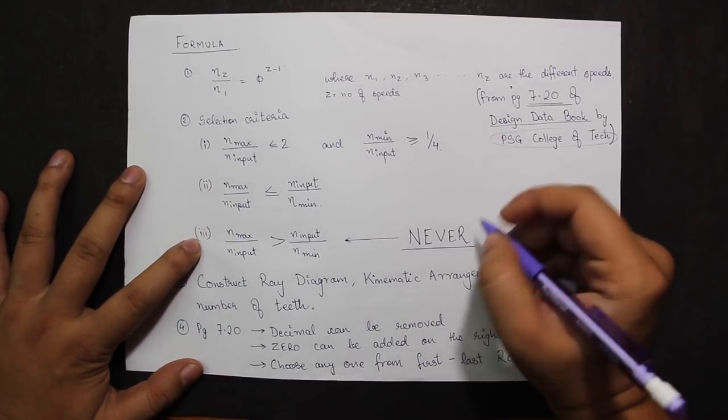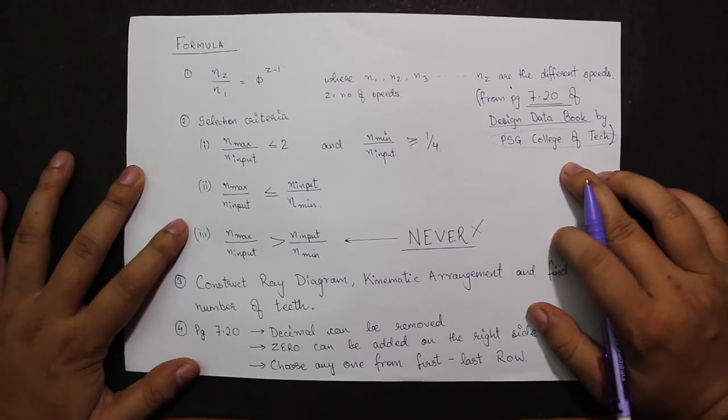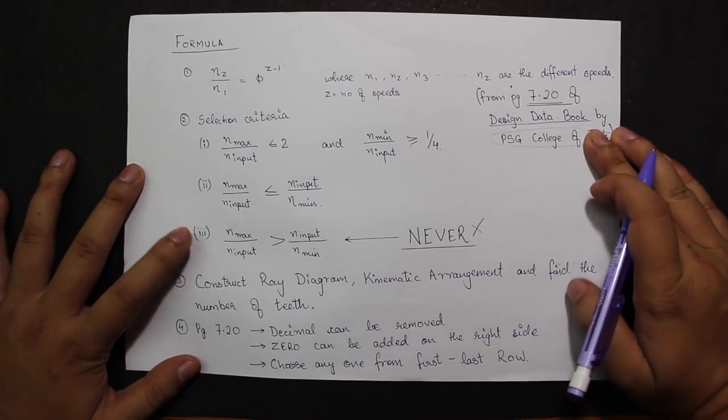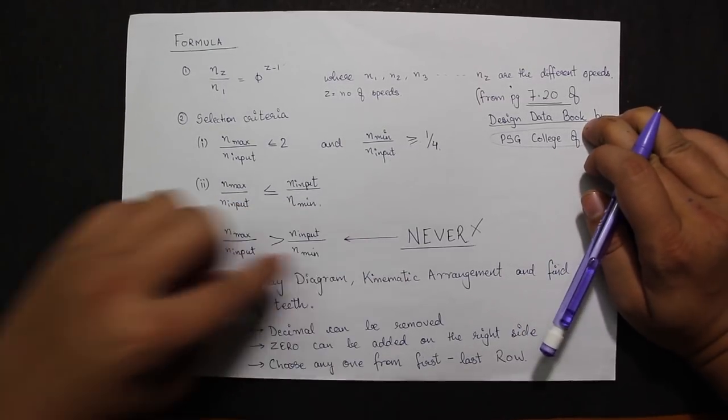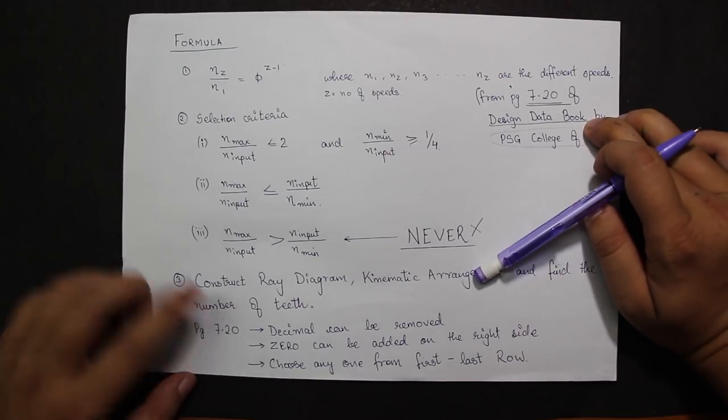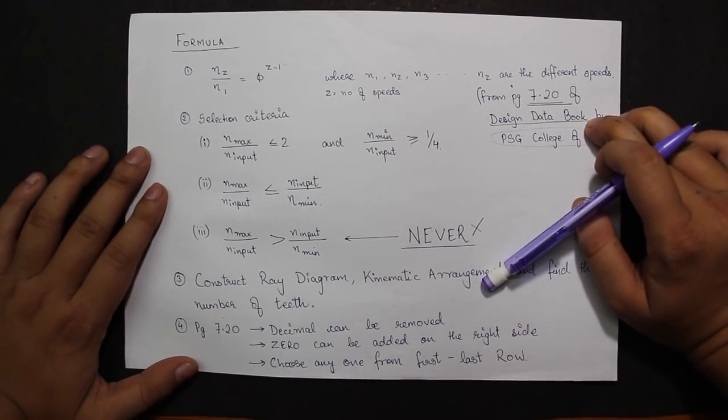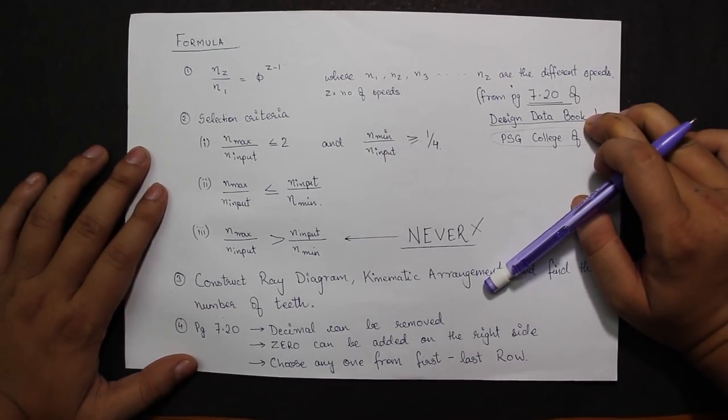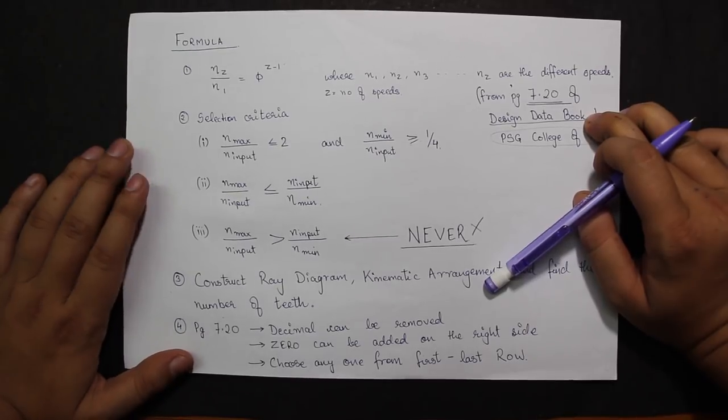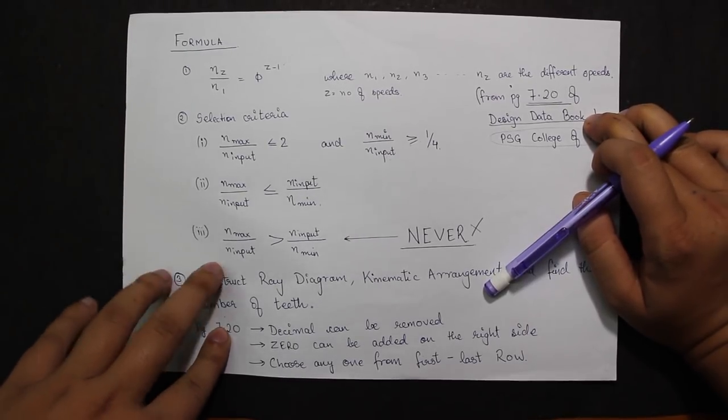When we jump to the questions, it will ask three things: ray diagram, kinematic arrangements, and the number of teeth. All three I'll be calculating in the subsequent videos.